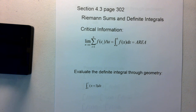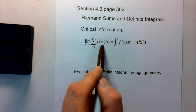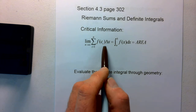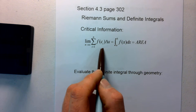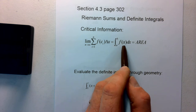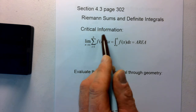Welcome back. We're looking at section 4.3 again — Riemann sums and definite integrals. Today I want to focus on the definite integral through geometry. Recall we've talked about the limit as n goes to infinity of the sum from i=1 to n of f(c_i) times delta x, where delta x is (b minus a)/n. That equals the integral from a to b of f(x) dx.